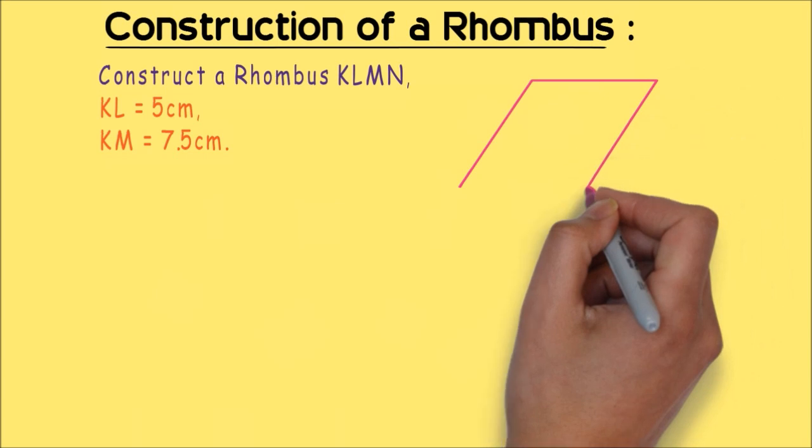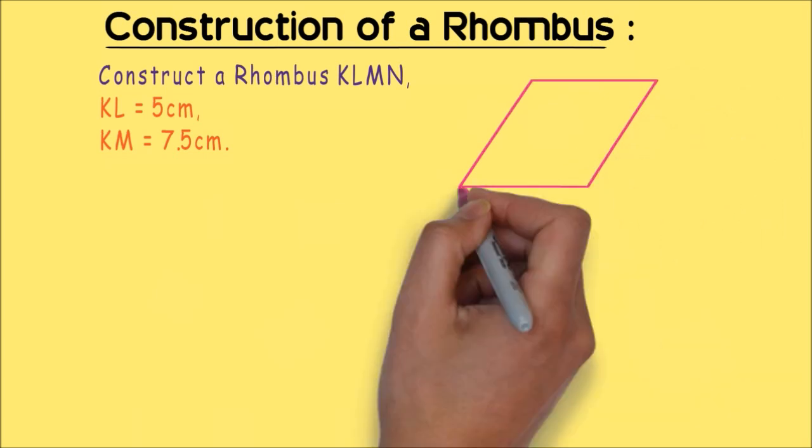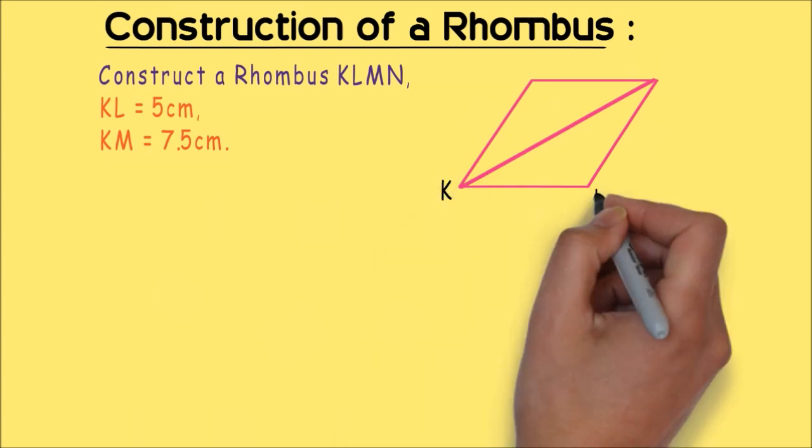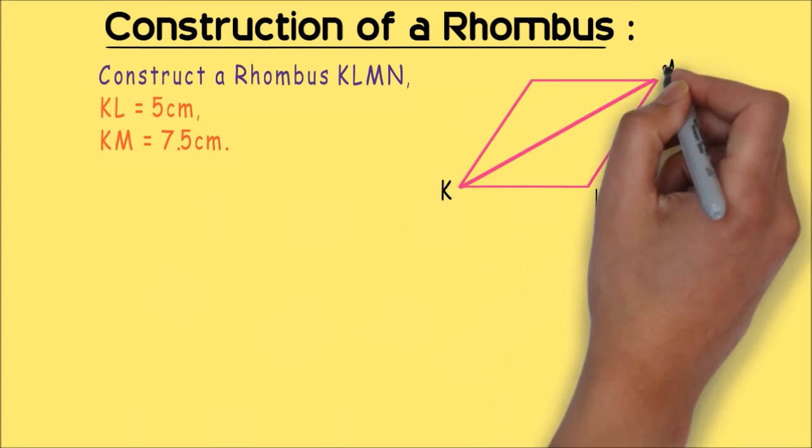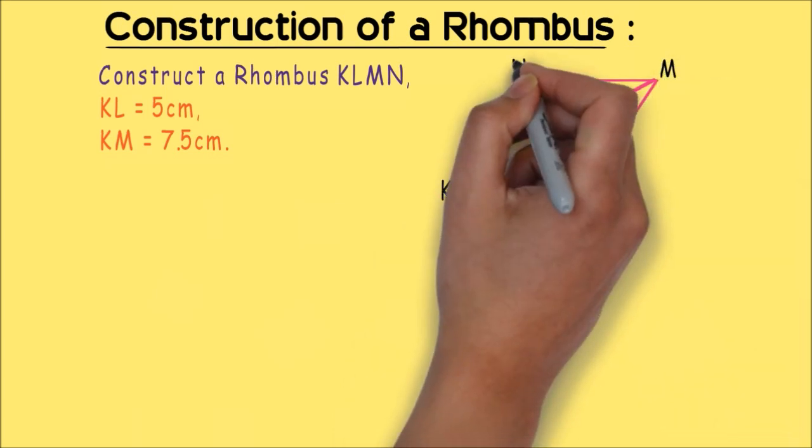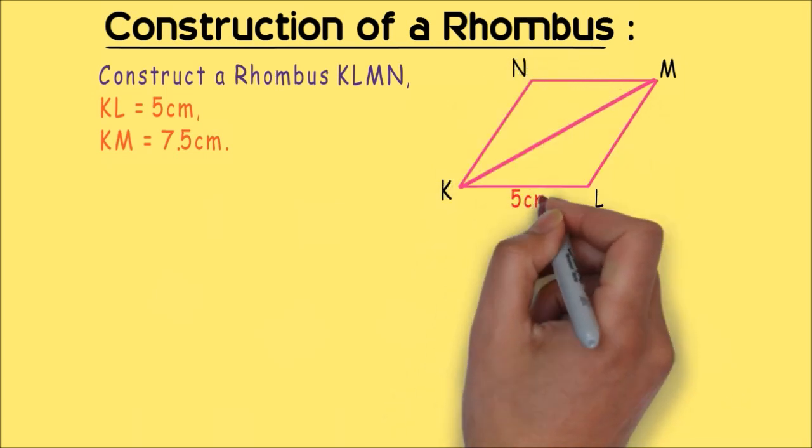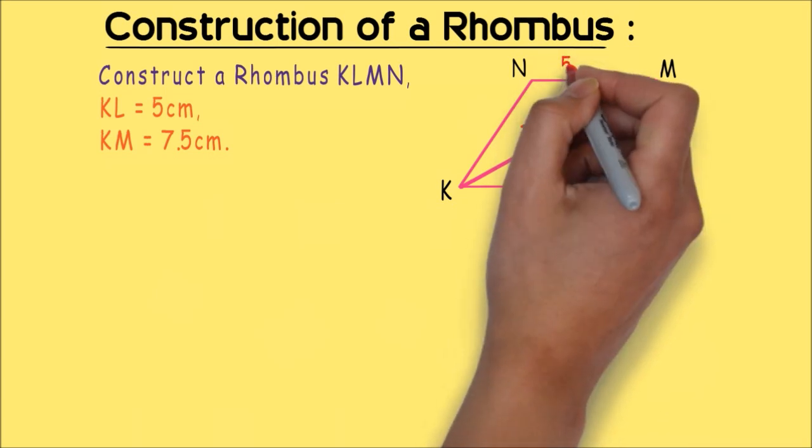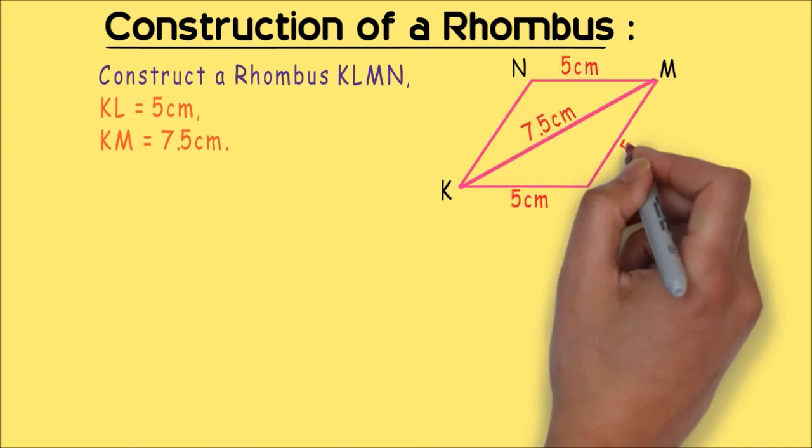We know the rhombus is a polygon where all sides are equal. Here we have a side and a diagonal: KL is 5 cm and KM is equal to 7.5 cm. Since all sides are equal, I am marking the opposite sides, which means all sides are equal, that is 5 cm each.